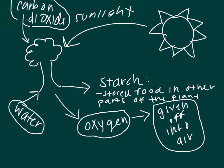This is a visual diagram of photosynthesis. Sunlight, carbon dioxide, and water is absorbed by the tree and is used to produce starch and oxygen. Oxygen is given off into the air where humans can breathe in, and starch is used as food in other parts of the plants.